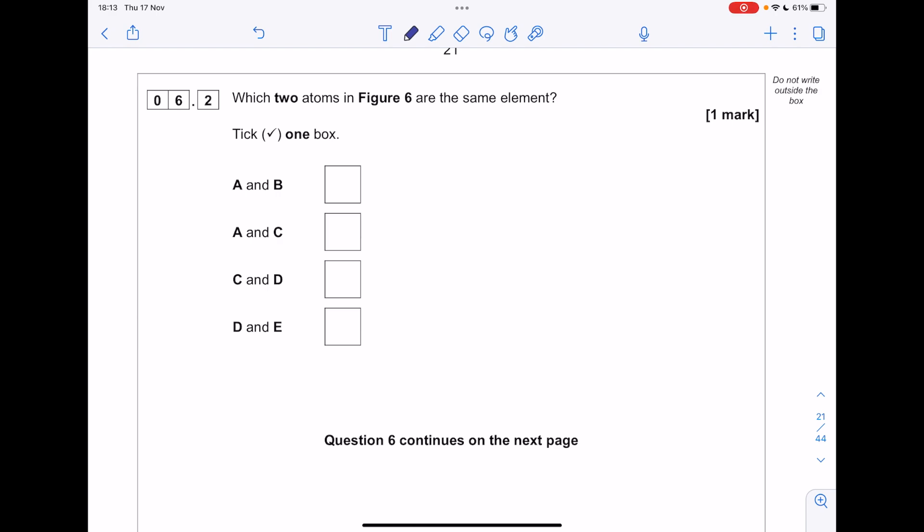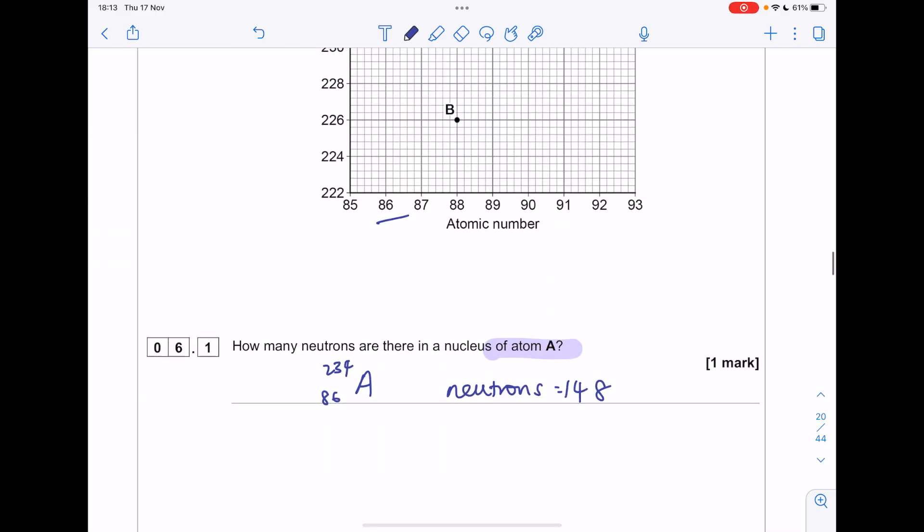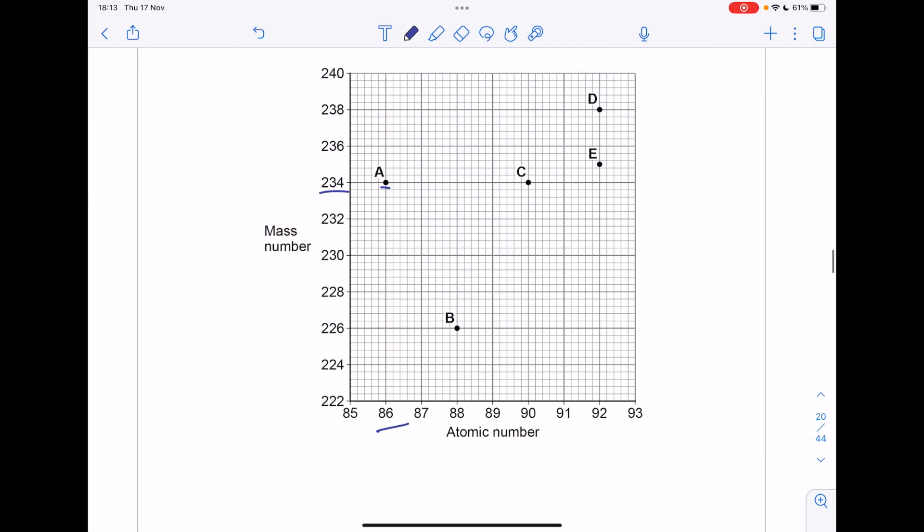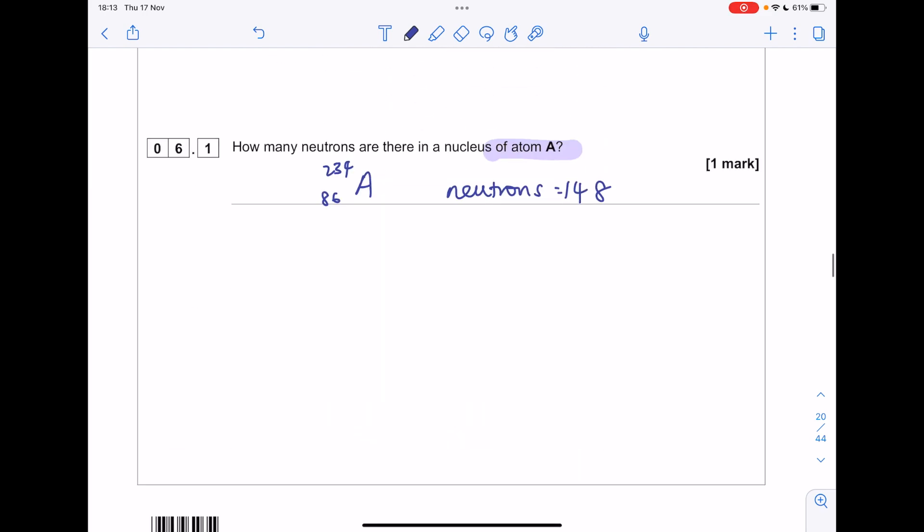Which two atoms in figure 6 are the same element? Remember, they have to have the same atomic number to be the same element. So here, 92. It's D and E.